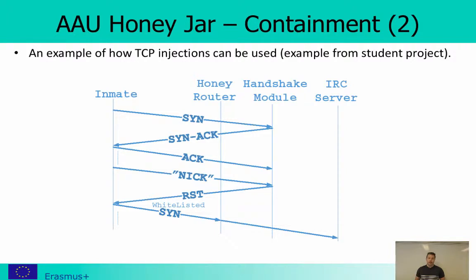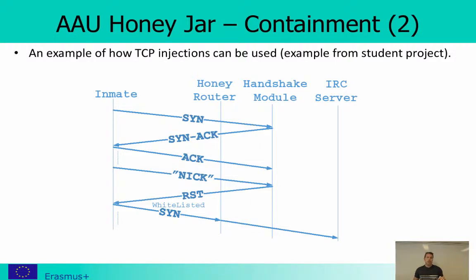Here we can see an example of how this is done using a normal TCP handshake. When the infected machine communicates with the command and control server, it sends a SYN packet, receives a SYN-ACK, and sends an ACK — a basic TCP three-way handshake. We have implemented a handshake module that intercepts the connection: whenever we get the request, we stop it in the module but send a reply back so the infected machine believes it has made a genuine connection.